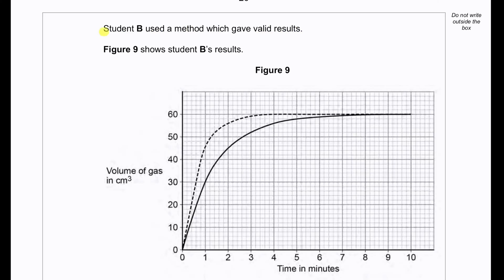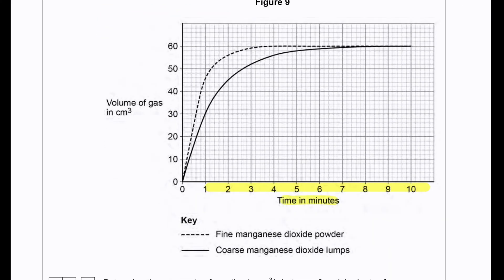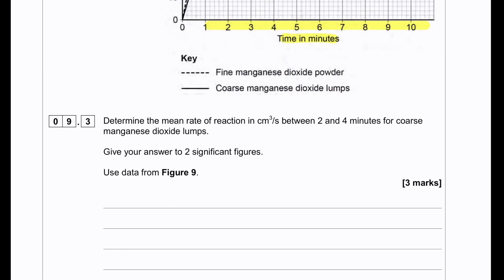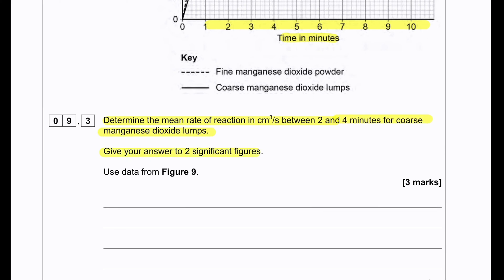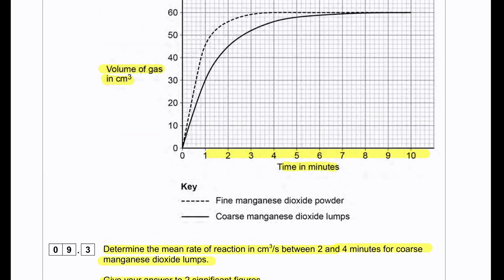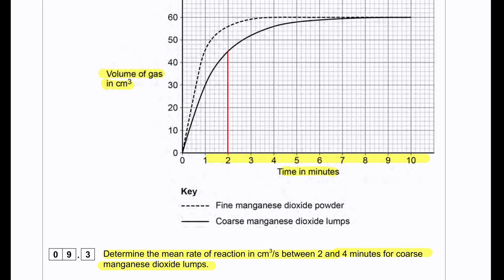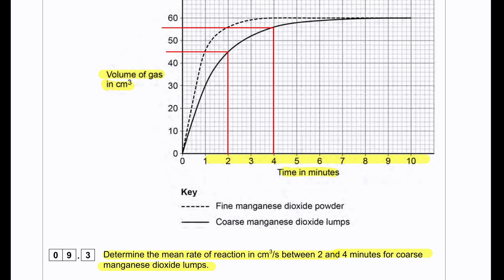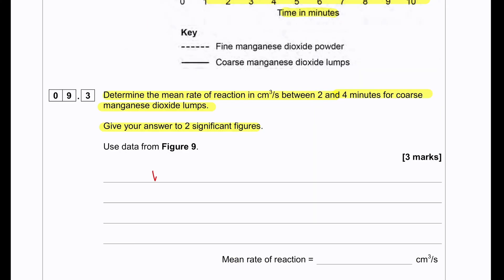Student B used a method which gave valid results. Figure 9 shows student B's results. Time in minutes - you can see 1, 2, 3, 4 to 10 minutes - and the increase in volume of gas in cm³. Determine the mean rate of reaction in cm³ per second between 2 and 4 minutes for coarse manganese dioxide lumps. Give your answer to two significant figures. Between 2 to 4 minutes, we're going to extrapolate to find out the values. So we can see this is 45 and this is 56. Volume of oxygen is 56 minus 45 equals 11 cm³. The time in seconds is 2 minutes, so it's 120 seconds. Rate equals volume divided by 120 seconds, which equals 0.09167 cm³ per second.